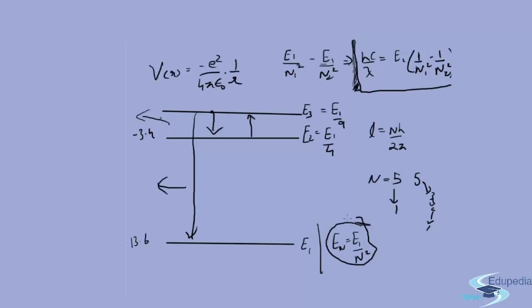One thing I'll mention in the end: this equation is often written as 1 by lambda equals R times 1 by n_1 squared minus 1 by n_2 squared. This is the mathematical version of the experimentalist version. If n_1 is 1 it's called the Lyman series, if n_1 is 2 it's called the Balmer series, if n_1 is 3 it's called the Paschen series, and so on.